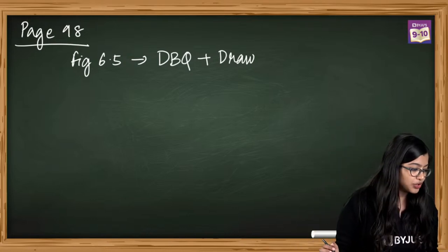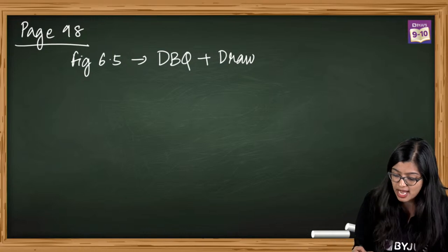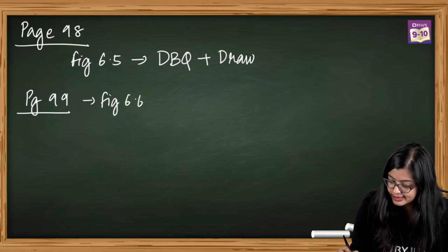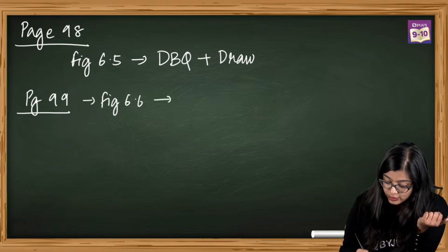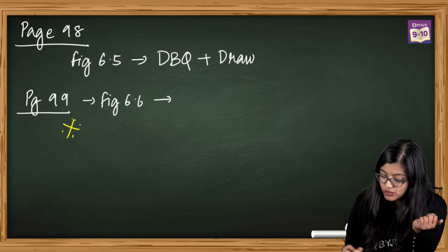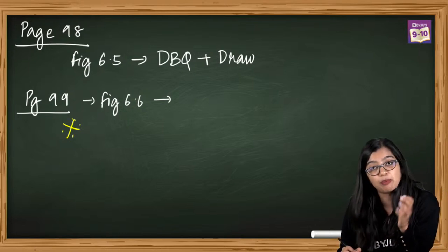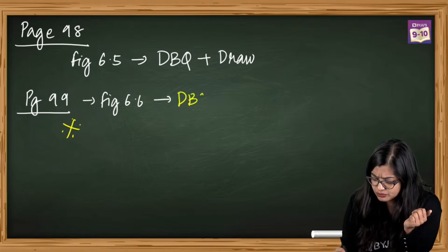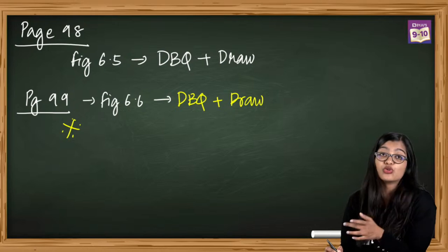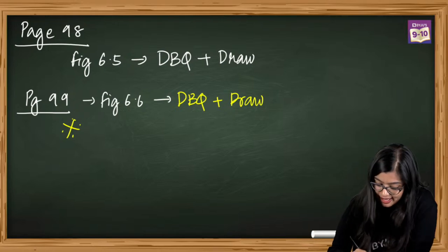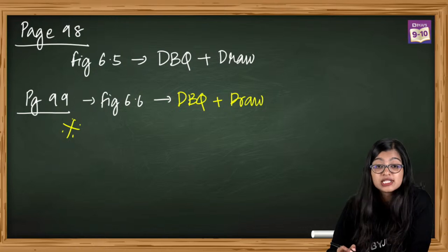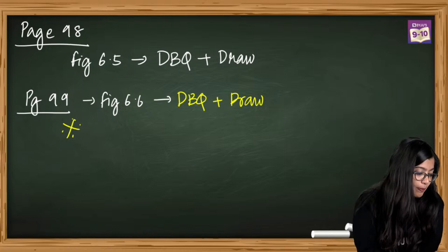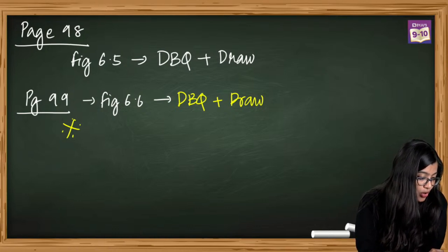Moving on to page number 99 - Figure 6.6 is the digestive system. This is super super important because a question on the digestive system is bound to come. It could be a diagram-based question, or at times they may ask you to draw it. In recent times boards haven't really asked students to draw it, but you never know - which is why it is very important to be prepared.